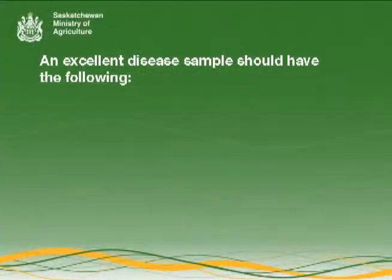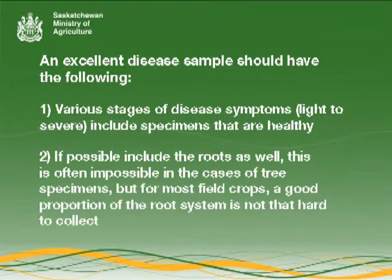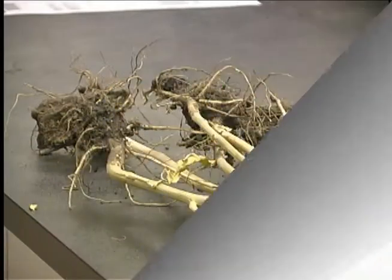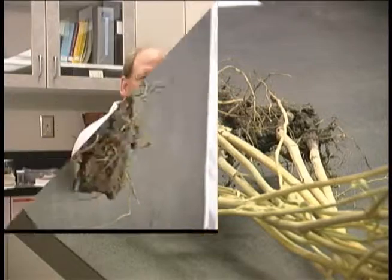An excellent disease sample should have the following: one, various stages of disease symptoms from light to severe, and also specimens that are healthy. Two, if possible, include the roots as well. This is often impossible in the cases of tree specimens, but for most field crops a good proportion of the root system is not that hard to collect.